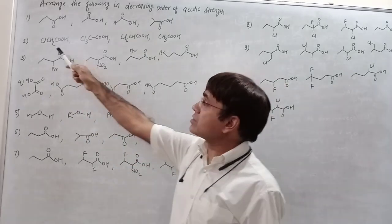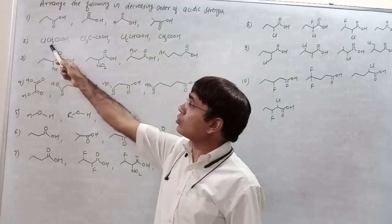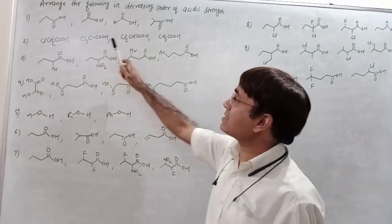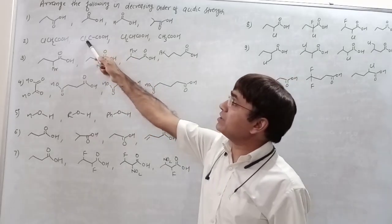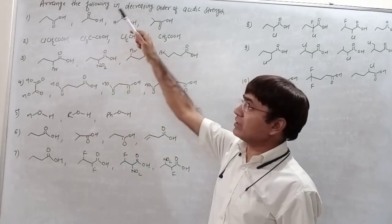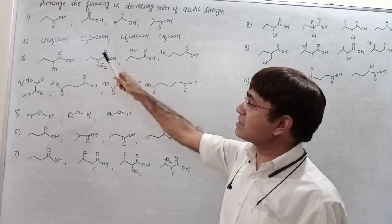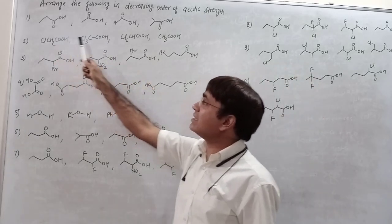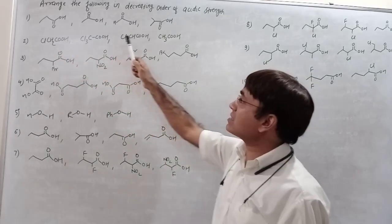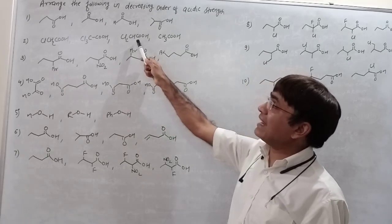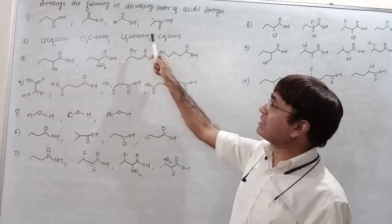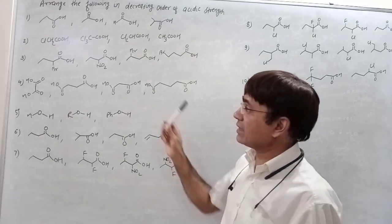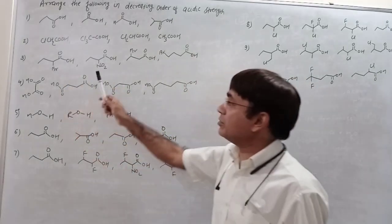In question number 2, this is 2-methylpropanoic acid. This is trichloroacetic acid — here carbon has chlorine. In light reflection you can see this. So this is chloroacetic acid, this is trichloroacetic acid, this is dichloroacetic acid, and then it is acetic acid.